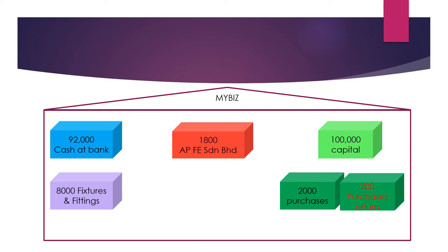So after all the transactions — owner brought in money, bought fixtures and fittings, bought trading goods, and returned the faulty goods — this is the visual picture inside the business.